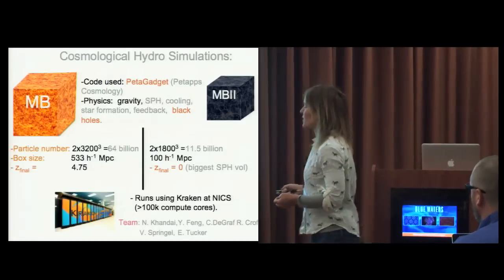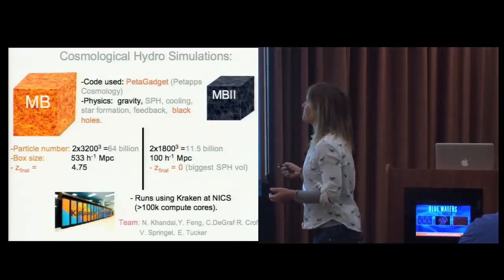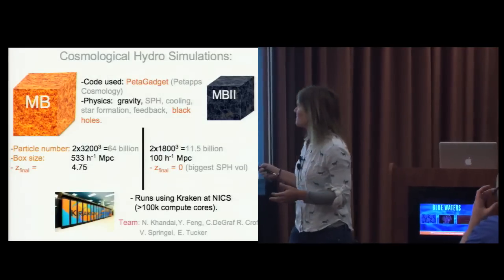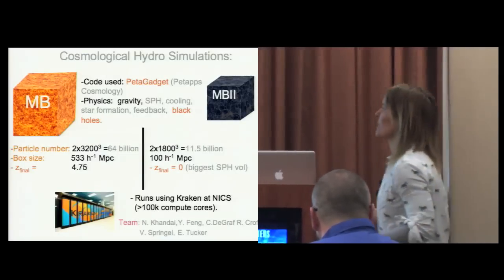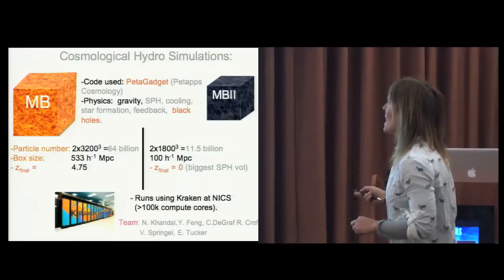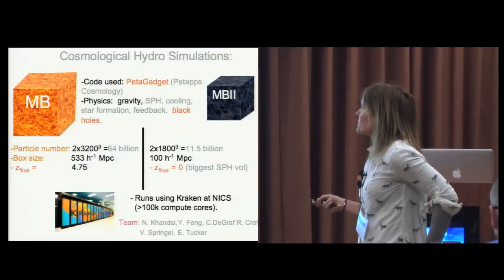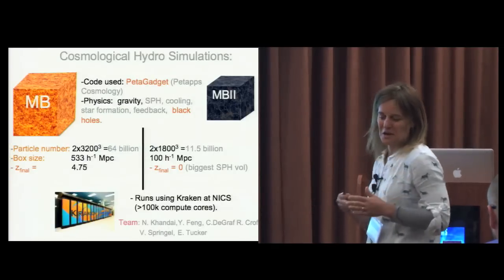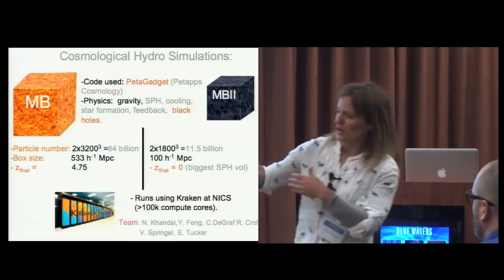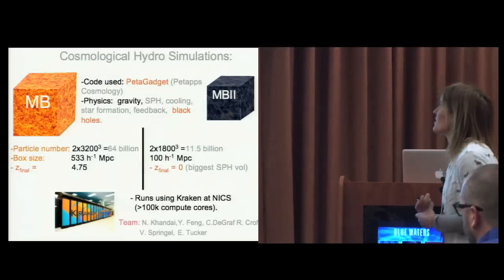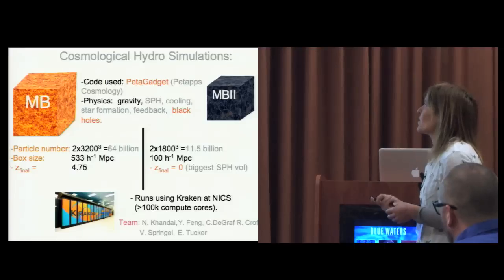There are other simulations, very large cosmological boxes that we ran on Kraken. These were volumes of a few hundred megaparsecs on a side, so cube this for the volume. They were run to different redshifts, mostly because of computational time. Eventually you want to evolve the universe all the way to today, so the redshift is zero in some of these runs.